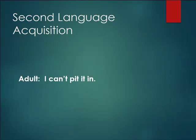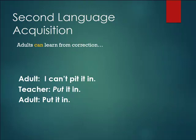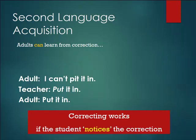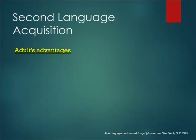This idea that children are much better language learners is wrong for several reasons. If an adult said 'I can't put it in,' a teacher could say 'put it in,' and the adult learner would know that's a correction — because we don't randomly go around repeating things that other people have just said. In the context of classroom language acquisition, the adult would recognize it as a correction and say 'put it in.' Correction does work, and adults can learn from it, but the student has to notice the correction.